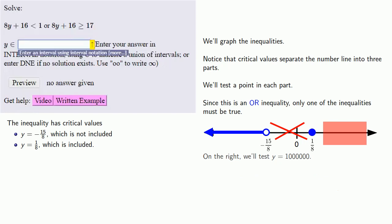On the right side, we'll test y equals 1 million. We let y equals 1 million in our first inequality, and we find on the left-hand side we have a very large number, which will not be less than 1. But since this is an OR inequality, only one of the inequalities must be true. So let's see if the other one is true. We let y equals 1 million in the second inequality. Now, on the left-hand side, we have a very large positive number, which will definitely be greater than or equal to 17. So the right interval is included.